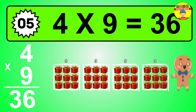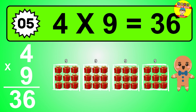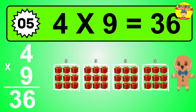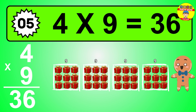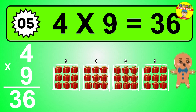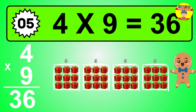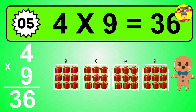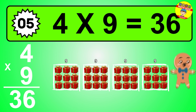The answer is four times nine is thirty-six. To calculate, we have four groups with nine balls each one. So how many balls do we have? Thirty-six balls.